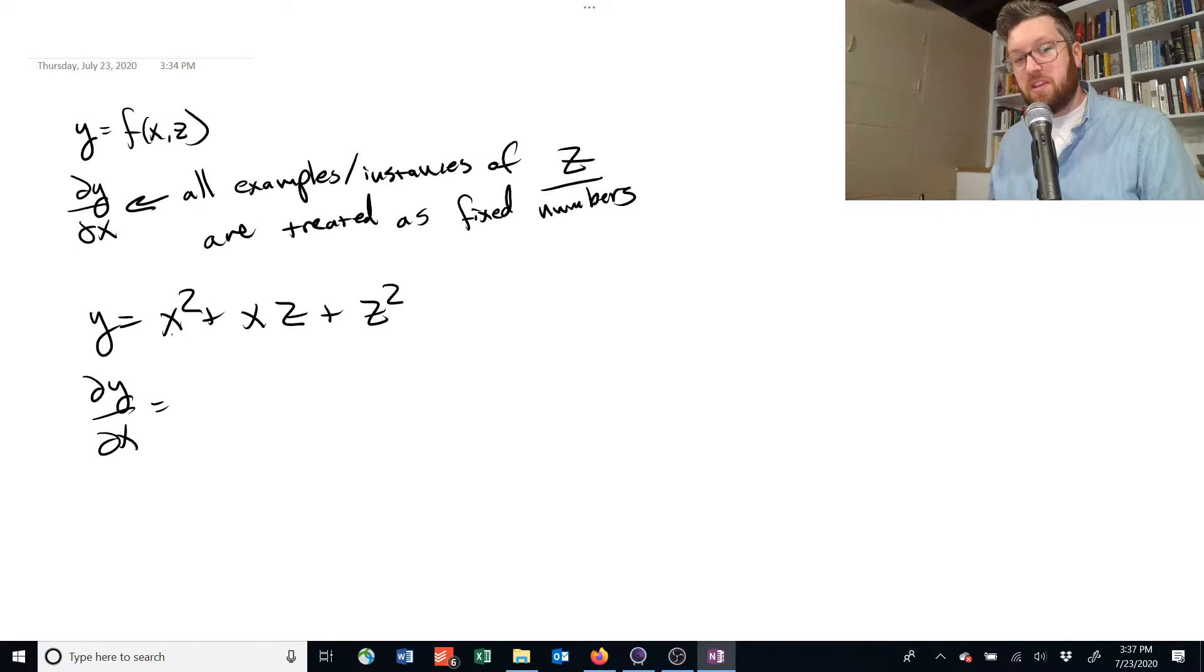The first one's pretty easy. When you add terms together, you can just treat them as is. So this is going to be 2x.